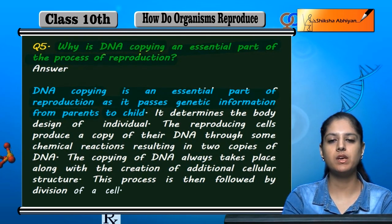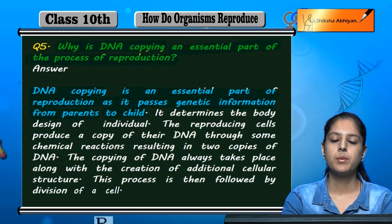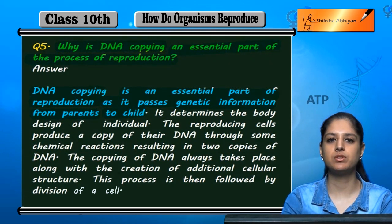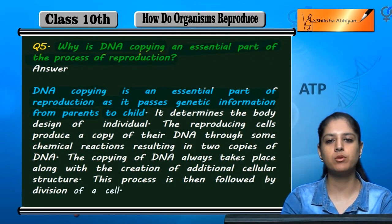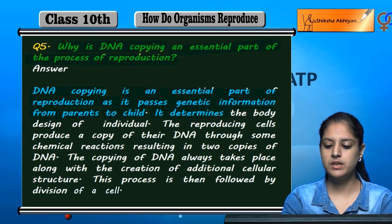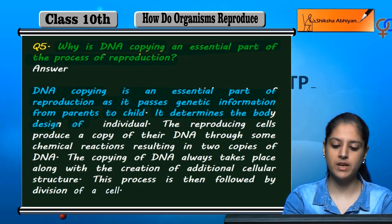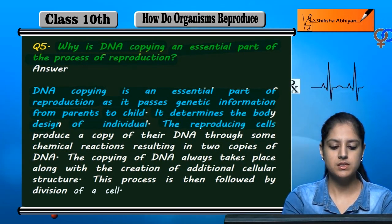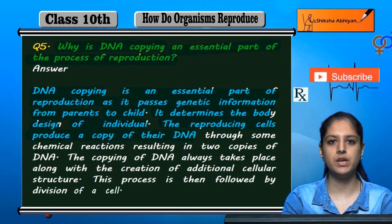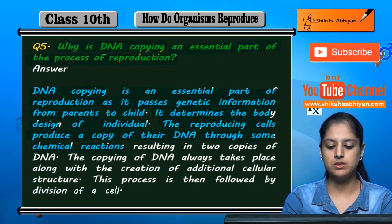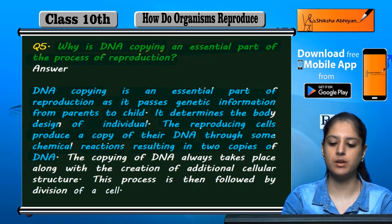The genetic information is copied and transferred to the child. It determines the body design of individuals. The reproducing cells produce a copy of their DNA through some chemical reactions, resulting in two copies of DNA.